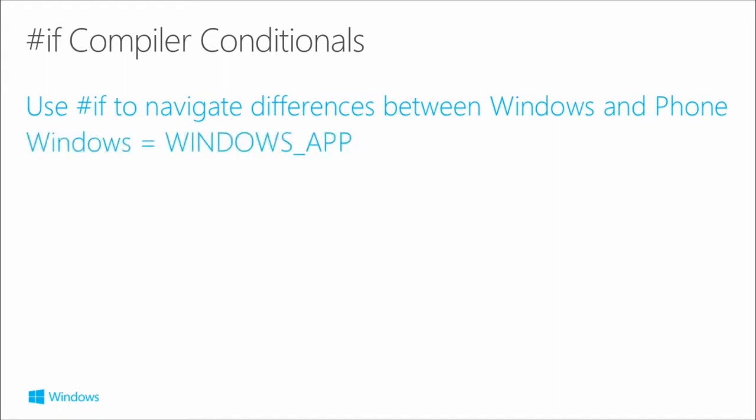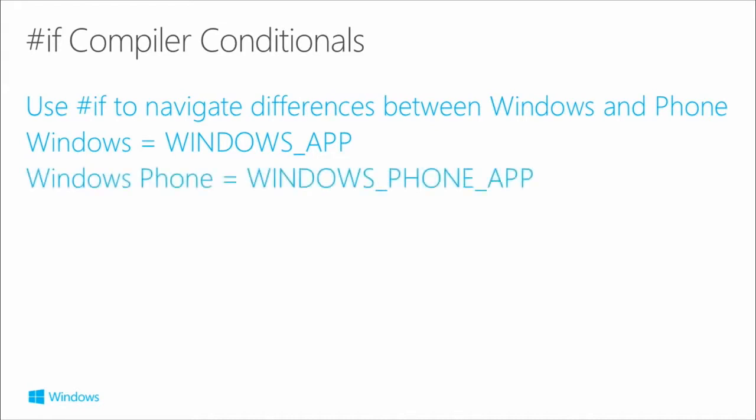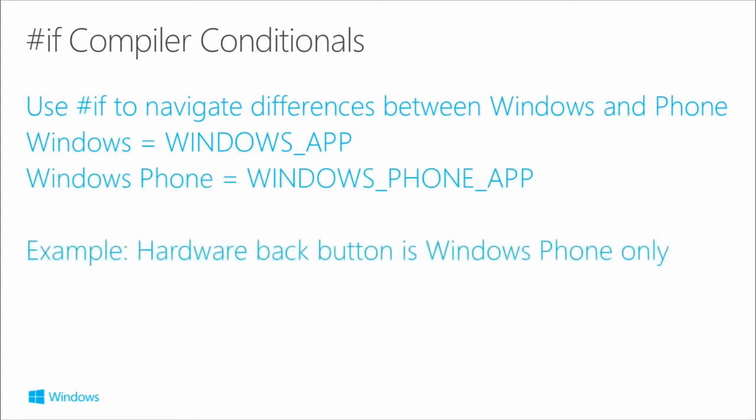The compiler conditionals for the record: for Windows it's WINDOWS_APP, and for Windows Phone it's WINDOWS_PHONE_APP. If you go into the project properties under the Build tab, you can see these compiler conditionals are already defined there. The new project templates have these already baked in.